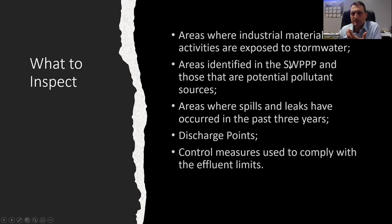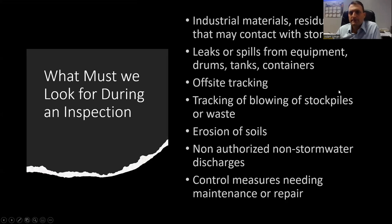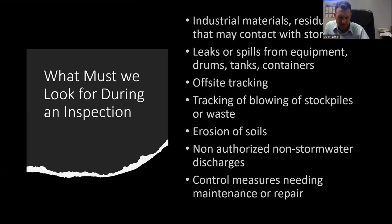You have to inspect all areas where industrial materials or activities are exposed to stormwater, areas identified in the SWPPP as potential pollutant sources, where spills or leaks have occurred in the past three years, discharge points where water leaves your site, and any control measures used to comply with effluent limits. During the inspection, the permit specifically asks you to look for industrial materials, residue, trash, leaks from equipment or tanks or containers, any offsite tracking, blowing of stockpiles, any waste, erosion, non-authorized non-stormwater discharges, and any control measures that need repair.